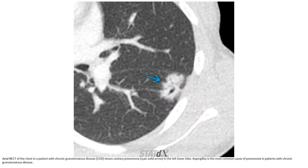This is a non-contrast CT of the chest in a patient with chronic granulomatous disease, showing cavitary pneumonia in the left upper lobe. Aspergillus is the most common cause of pneumonia in patients with chronic granulomatous disease.